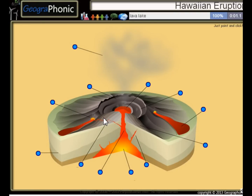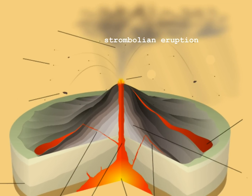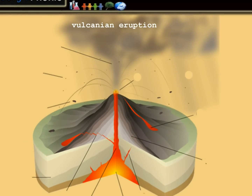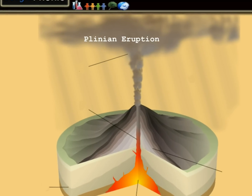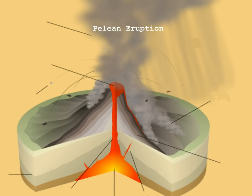Eruptions low on silica and low on gas are calm. Eruptions low on silica and high on gas are also calm. Eruptions high on silica and low on gas are moderate. Eruptions high on silica and high on gas produce Plinian or Peléan eruptions.